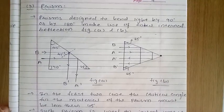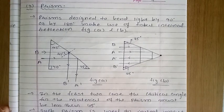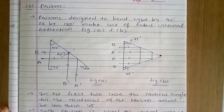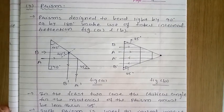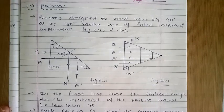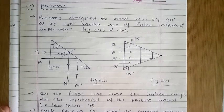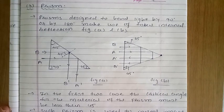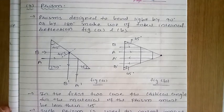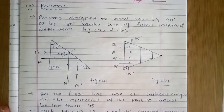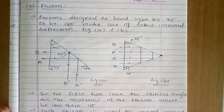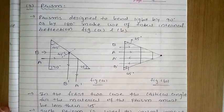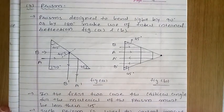Hello friends. Yesterday we discussed about two applications of total internal reflection: first, Mirage, and second, Diamond. Today we will discuss about another two applications of total internal reflection. We already know there are four applications: Mirage, Diamond, Prism, and Optical Fiber. We already discussed Mirage and Diamond. Today we will discuss Prism and Optical Fiber.